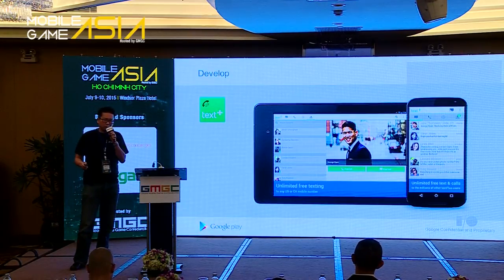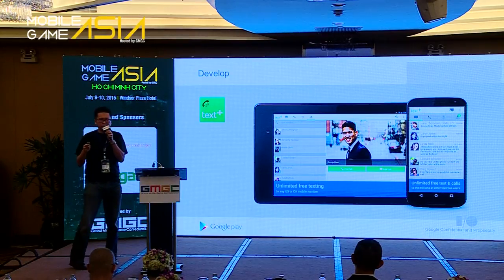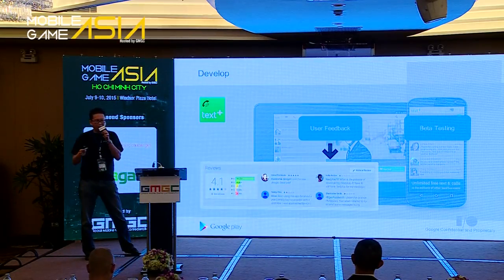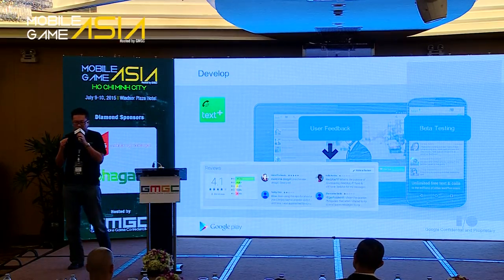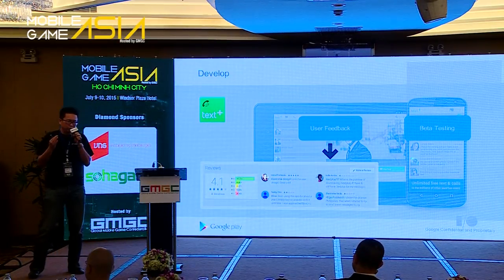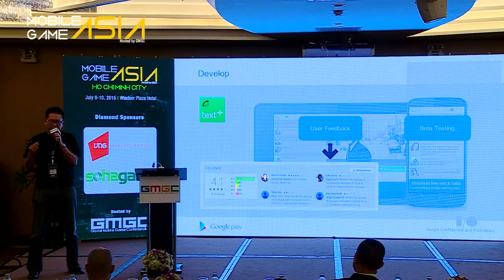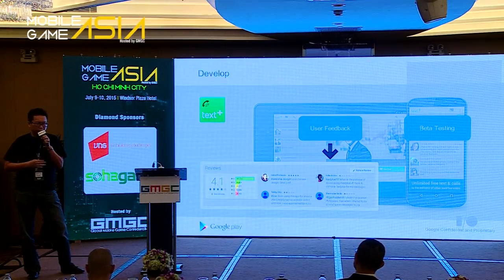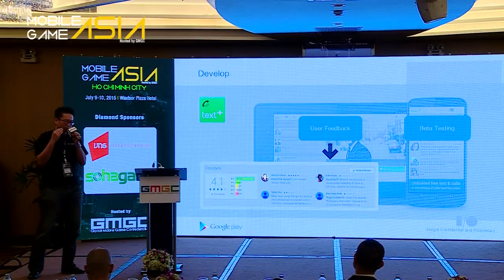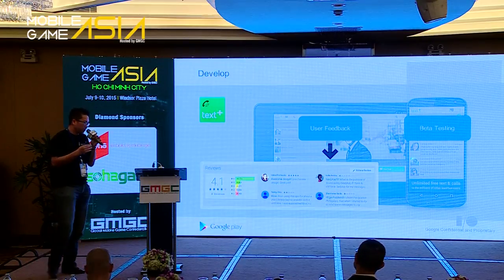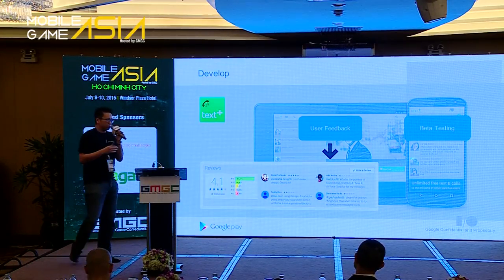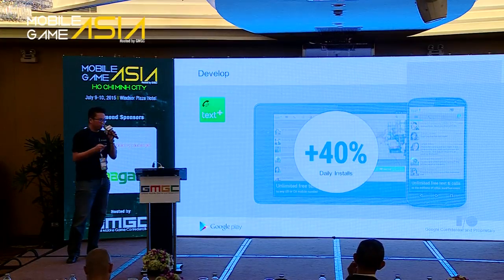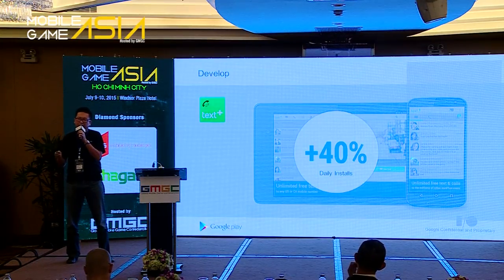The next example is an app called Text Plus, offering unlimited free texting in the US. What these guys did to develop a better app was focus very heavily on alpha beta testing. In your developer console, you release the app for real-life user feedback and review — before it even goes to commercial launch. Test it in a closed user group, look at the feedback users are giving you, and fix those changes so you can develop a much better app. As a result, Text Plus increased their daily installs by 40% because of alpha beta testing.